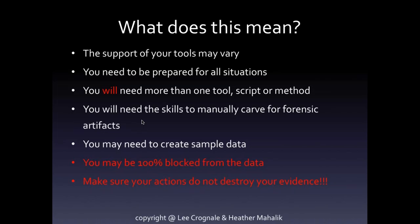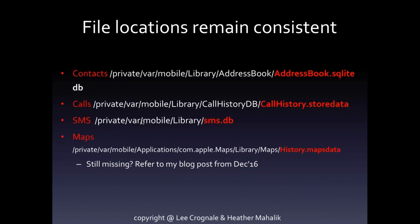You also have to realize you may be blocked from the data. If you have a locked iPhone X and you cannot get into it, you may not be able to get in if you can't find backdoor methods. Cindy Murphy just wrote a blog — she found a backdoor method to update an iOS device to iOS 11 to get around the once encrypted, always encrypted issue. But the issue is that method makes changes to the device — it changed the background, screensaver, and it's going to change log files and could overwrite evidence. You want to make sure you know whether your actions will destroy your evidence or not.